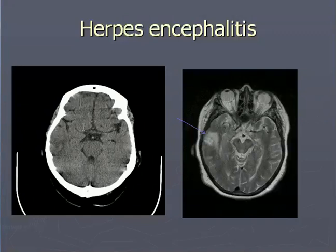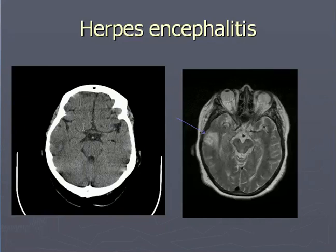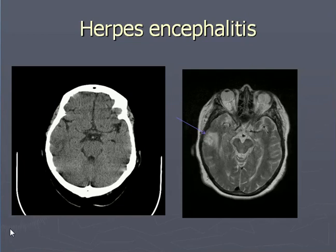Now this is one example of brain infection with a virus — this is herpes encephalitis. The CT and the MR at the same level, same patient. The CT shows hardly any abnormality whereas the MR is depicting an abnormal signal in the right temporal region, as the arrow marks that area. The idea to show these images is to demonstrate the sensitivity of MR.